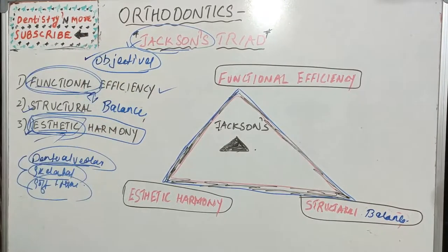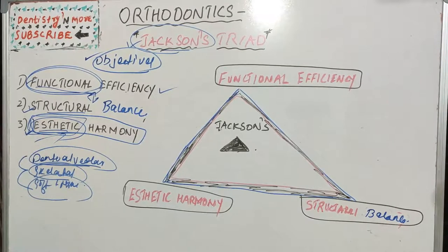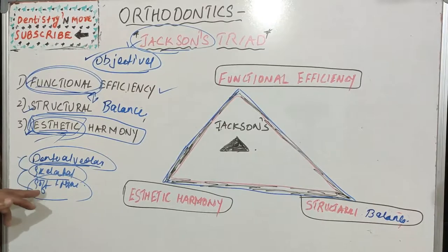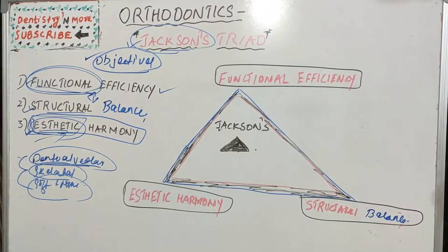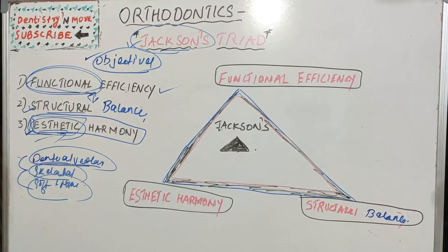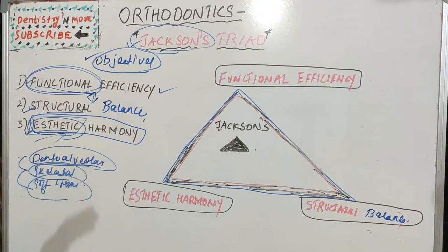These are the three things Jackson summarized as the objectives of orthodontic treatment: functional efficiency (the arrangement of teeth and basic functions like mastication should be at a proper balance), structural balance (dento-alveolar, skeletal, and soft tissue forces should be balanced), and aesthetic harmony (the main concern of the patient). These three form the triangle of Jackson's Triad — a commonly asked short note in university exams.